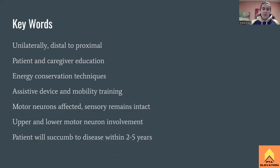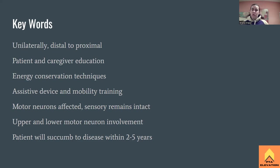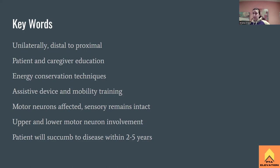Everyone must be involved and communicating — this is an interdisciplinary approach. Key points: the disease progresses unilaterally from distal to proximal, so hands and feet are affected first on one side, progressing up from hands to wrist, forearm, elbow, and eventually toward the shoulder and diaphragm. Caregiver education on the condition, specialist referrals, and what to expect are all essential, as eventually the patient will need help with all ADLs.